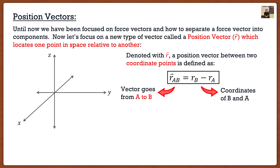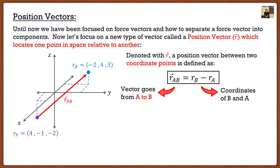Let's see this visually. In a 3D space we have two points: a purple point and a blue point, each with known coordinate values. Between these two points we can form a line. A position vector is the vector that goes from one point to the other. If I'm starting from the purple point and going to the blue point, I'd call this position vector PB — P for purple, B for blue.